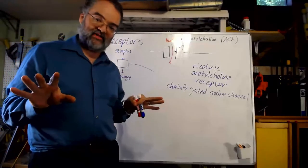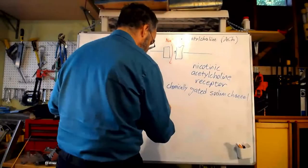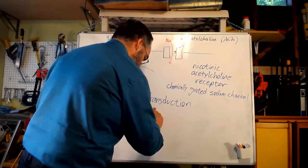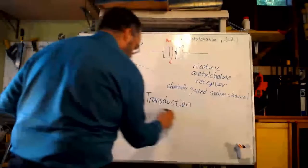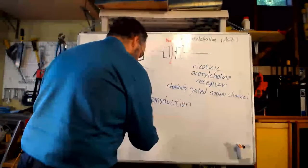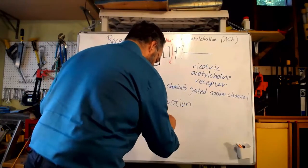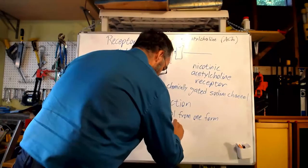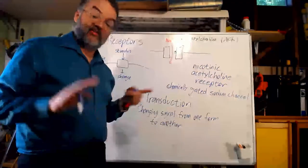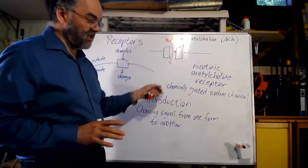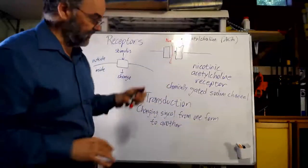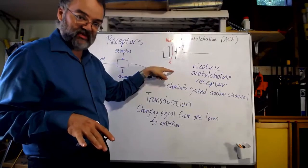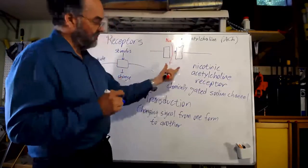Because of that, when we talk about receptors, we usually talk about the concept of transduction — changing a signal from one form to another. Here, outside the cell the signal is the presence of the molecule acetylcholine. Inside the cell the signal is a change in sodium concentration and possibly membrane potential. So this protein has transduced a signal — acetylcholine — into the presence of more sodium inside the cell. Different signal, but it still allows the inside of the cell to respond.